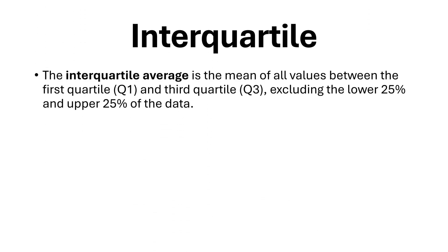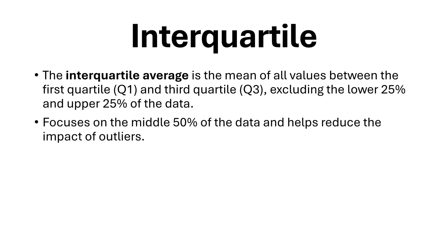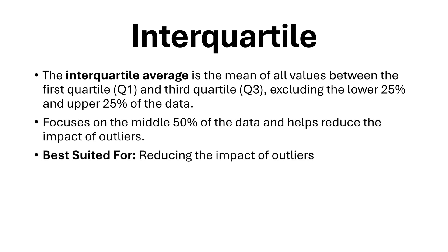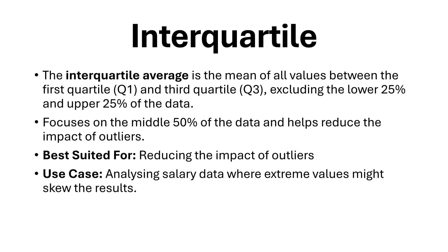The interquartile average is the mean of all values between the first quartile (Q1) and third quartile (Q3), excluding the lower 25% and upper 25% of the data. It focuses on the middle 50% of the data and helps reduce the impact of outliers. Best suited for reducing the impact of outliers. Use case: analyzing salary data where extreme values might skew the results.